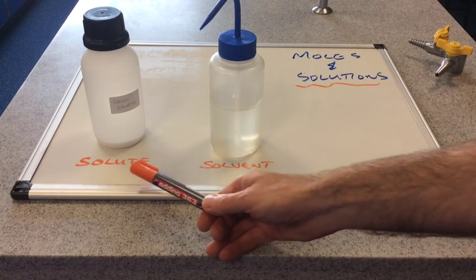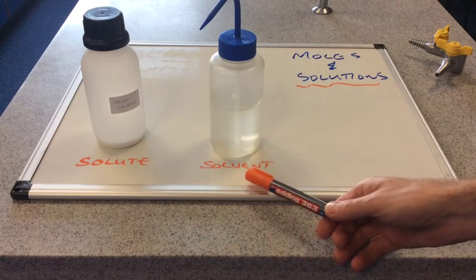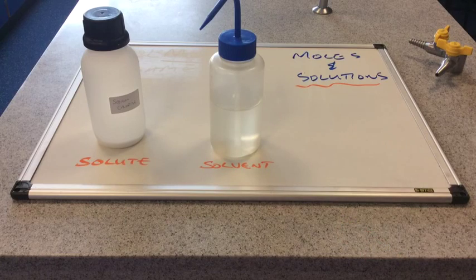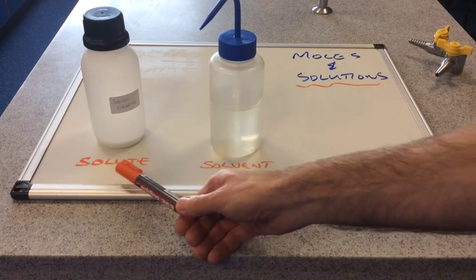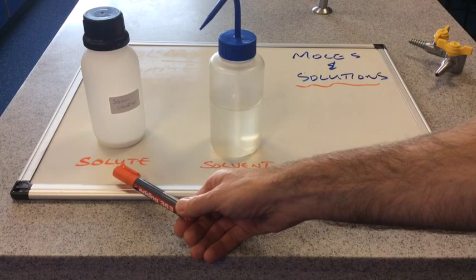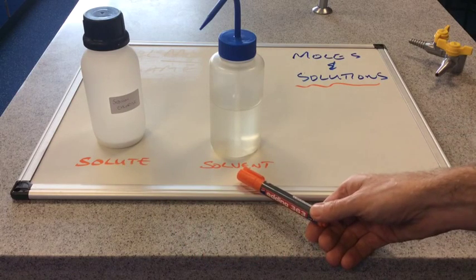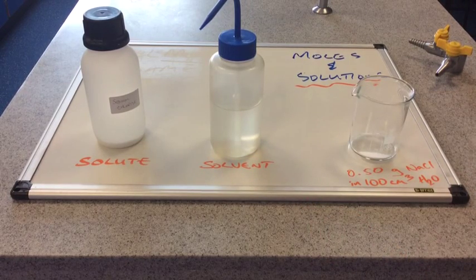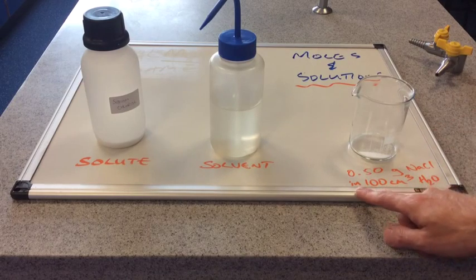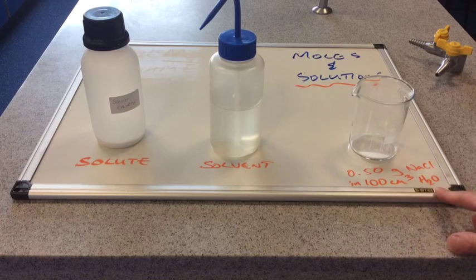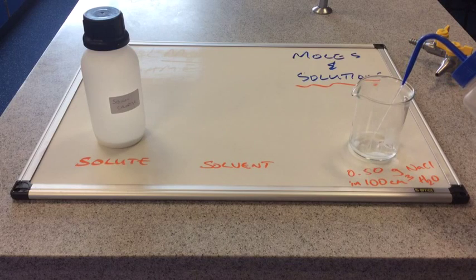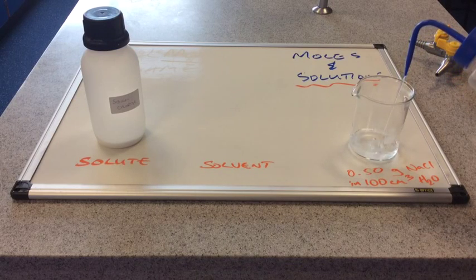My solute is going to be sodium chloride and my solvent is going to be water. The important thing to know is I need to know how many grams of solute I'm using and what volume of solvent I'm putting it into. I've weighed out 0.50 grams of sodium chloride in the beaker, and to that I'm going to add 100 centimetres cubed of water. We are going to dissolve it by stirring and form a solution.